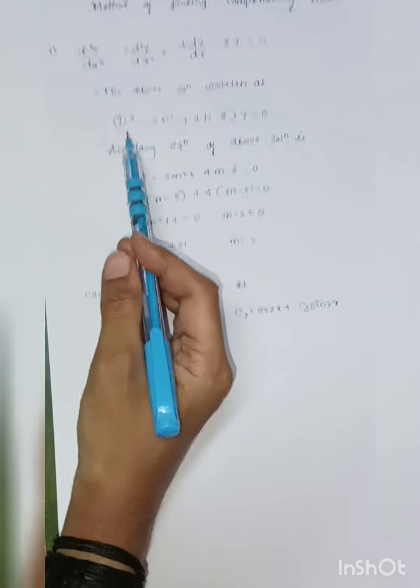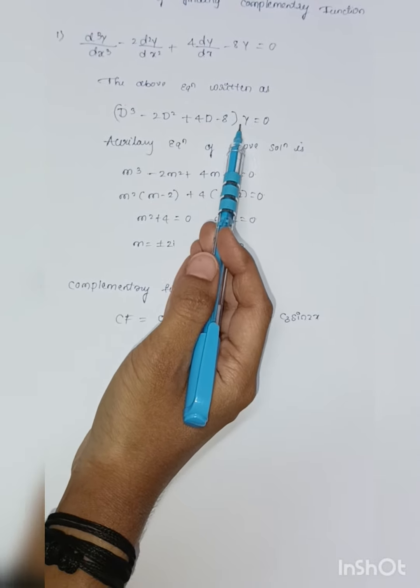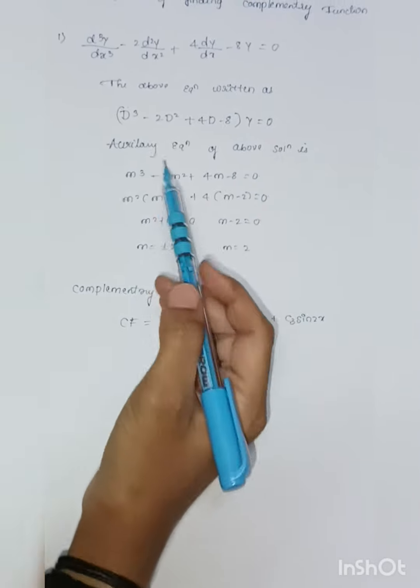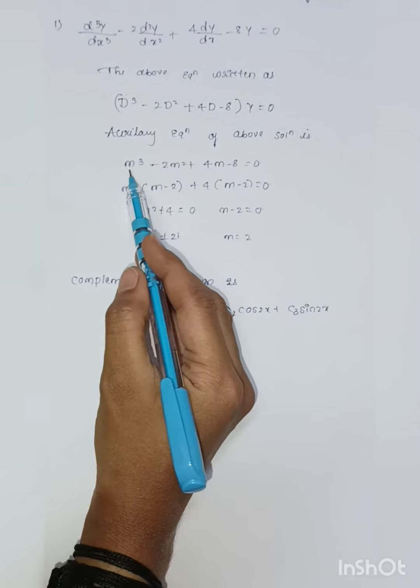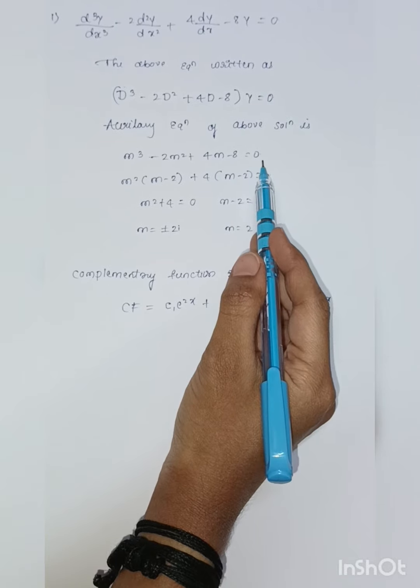The above equation is written as (D cubed minus 2D squared plus 4D minus 8) of y is equal to 0. The auxiliary equation of the above solution is m cubed minus 2m squared plus 4m minus 8 is equal to 0.